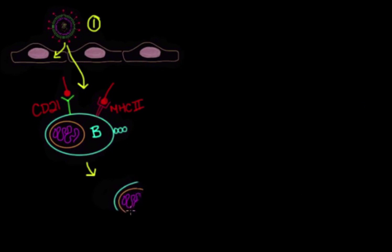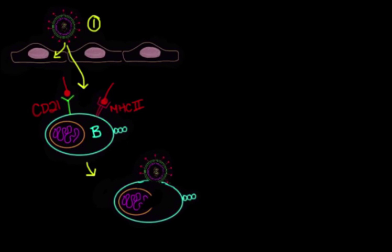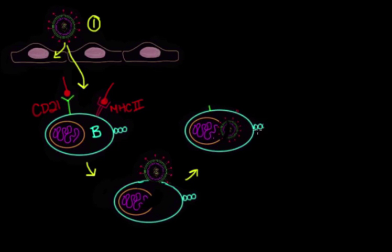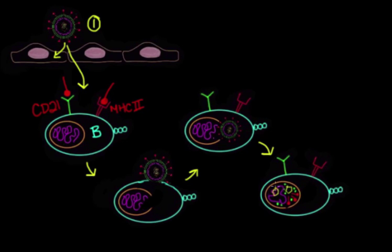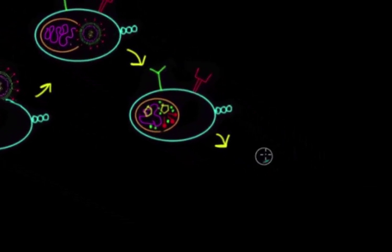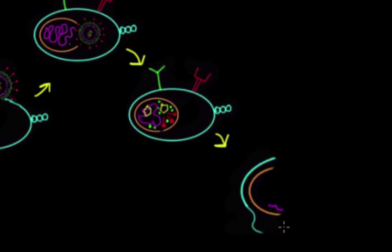This then causes the EBV capsid to fuse with the B-cell membrane in a process similar to endocytosis. This causes the virion to enter the cell. Once inside, the viral genome enters the host nucleus, basically taking over the cell. The virus uses the cell's enzymes, like DNA polymerase, to reproduce viral genetic material and proteins to form new viruses.